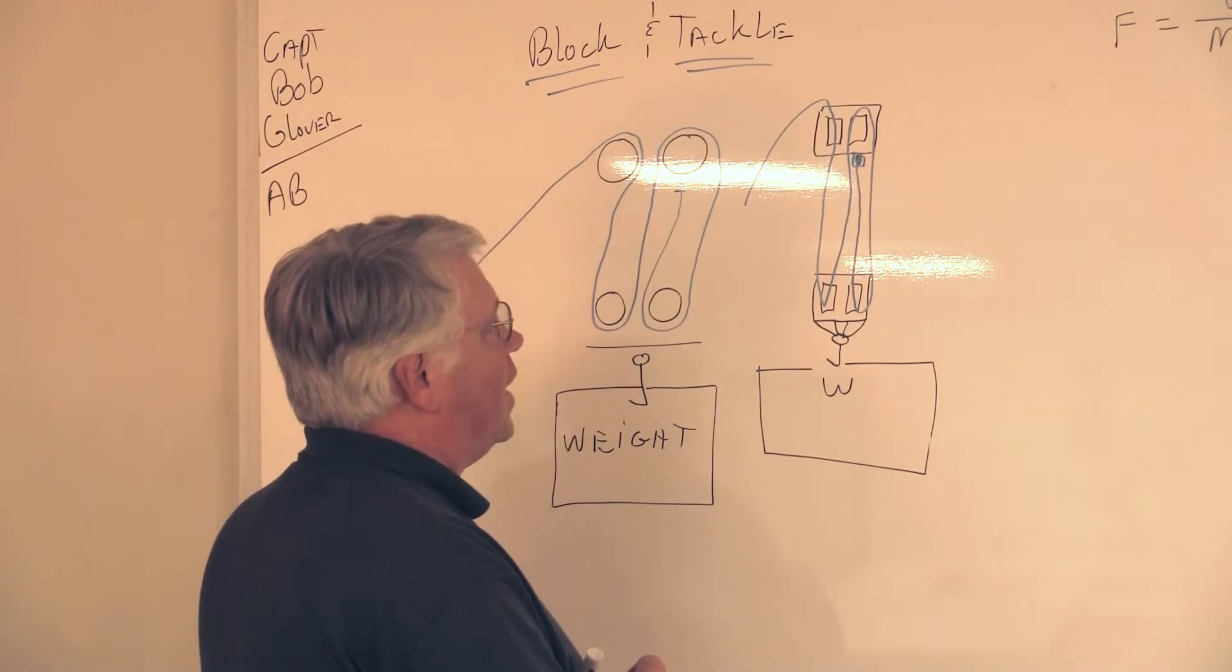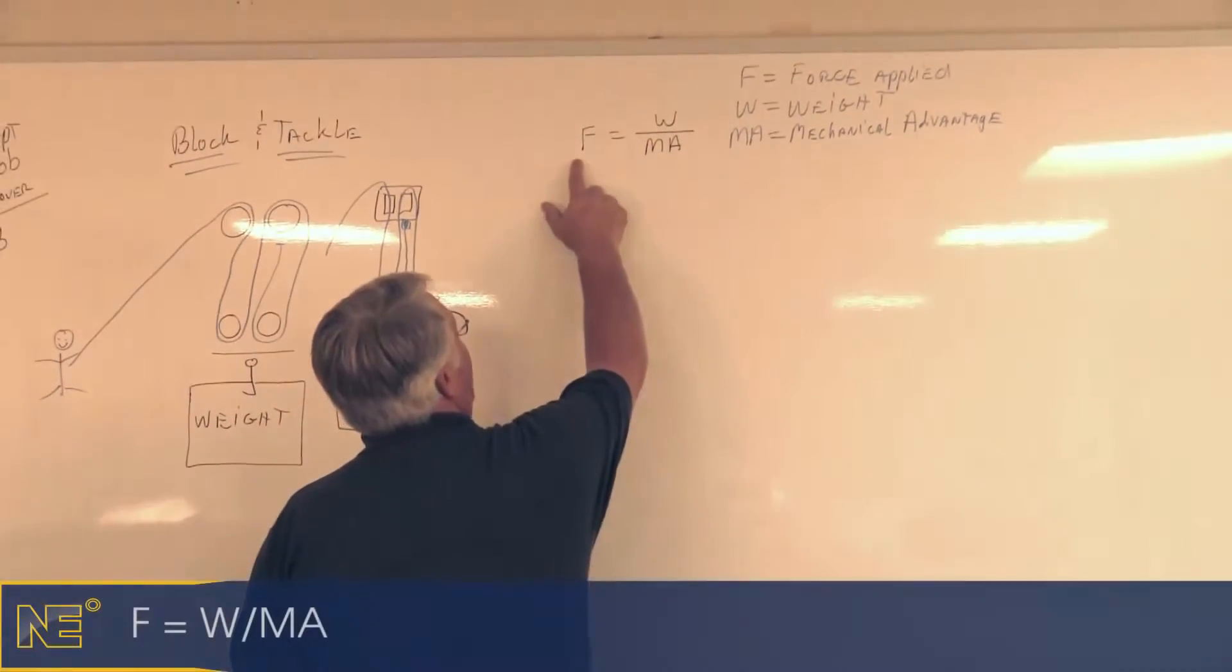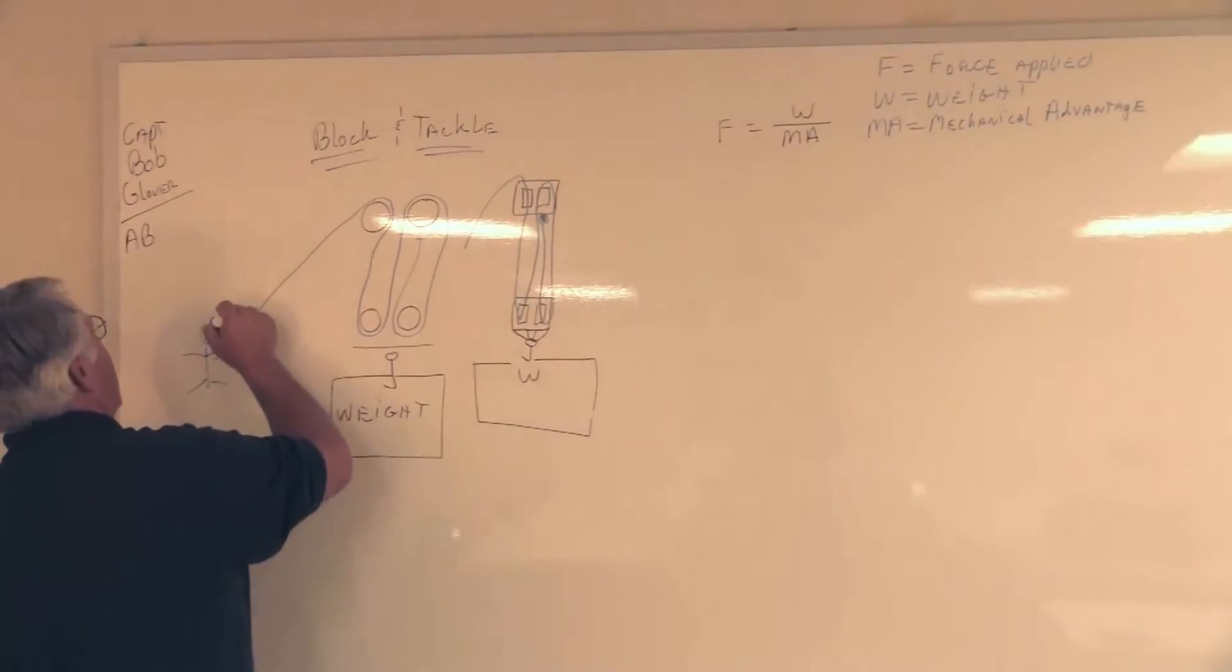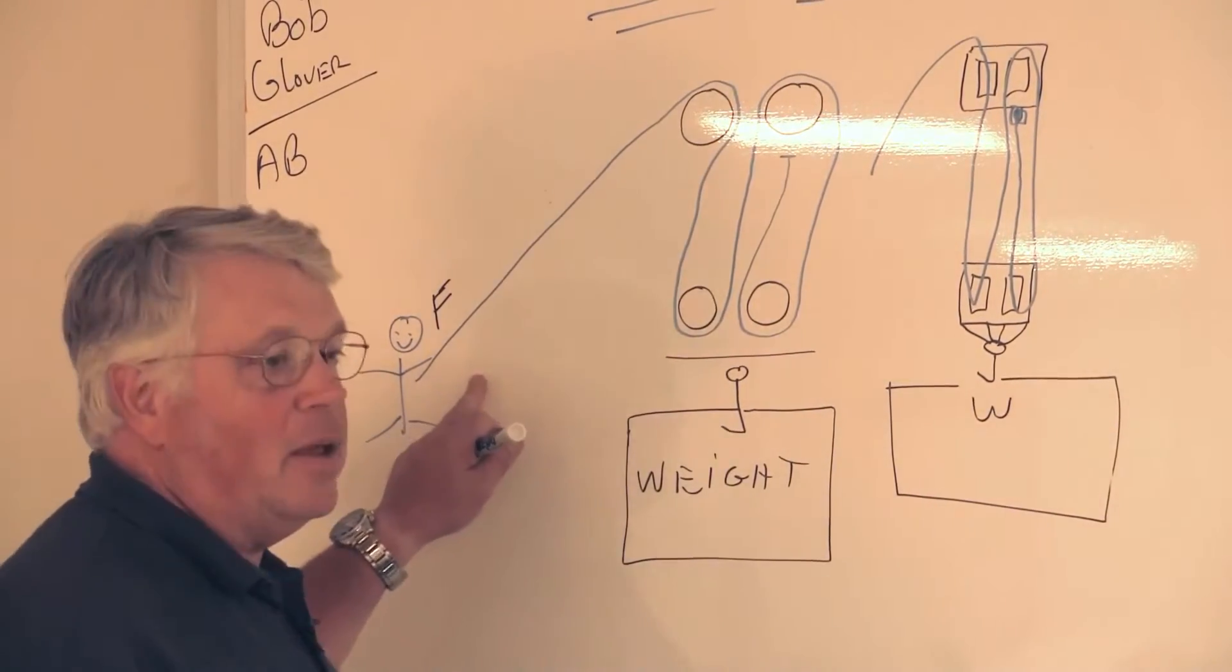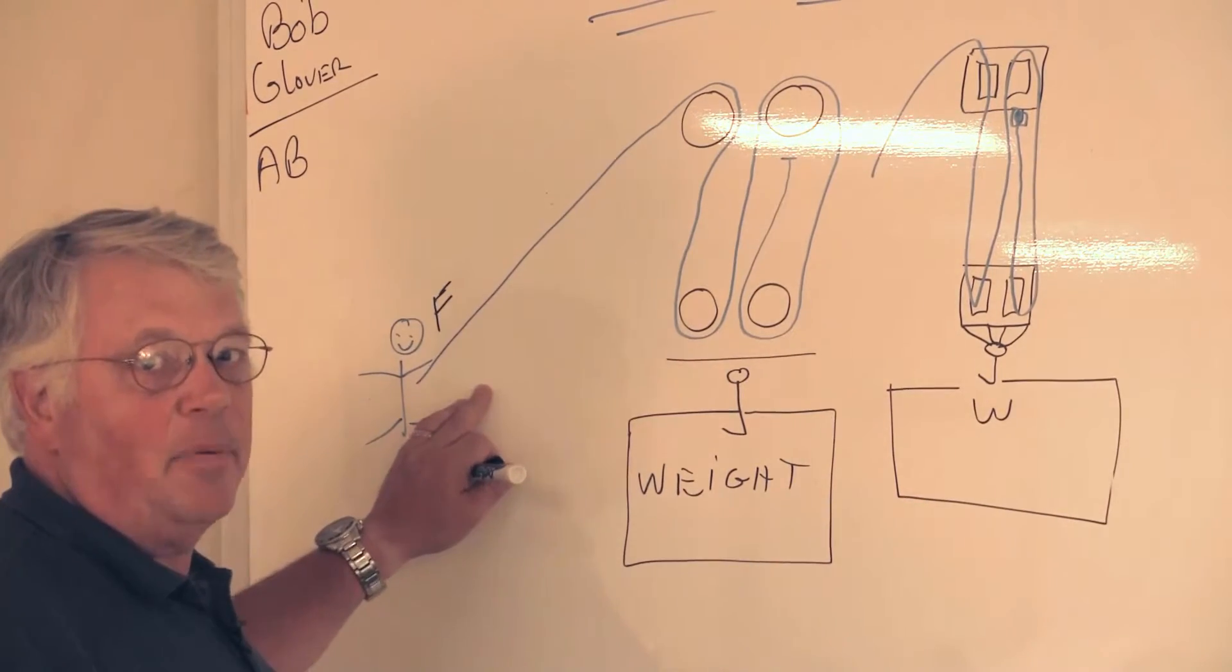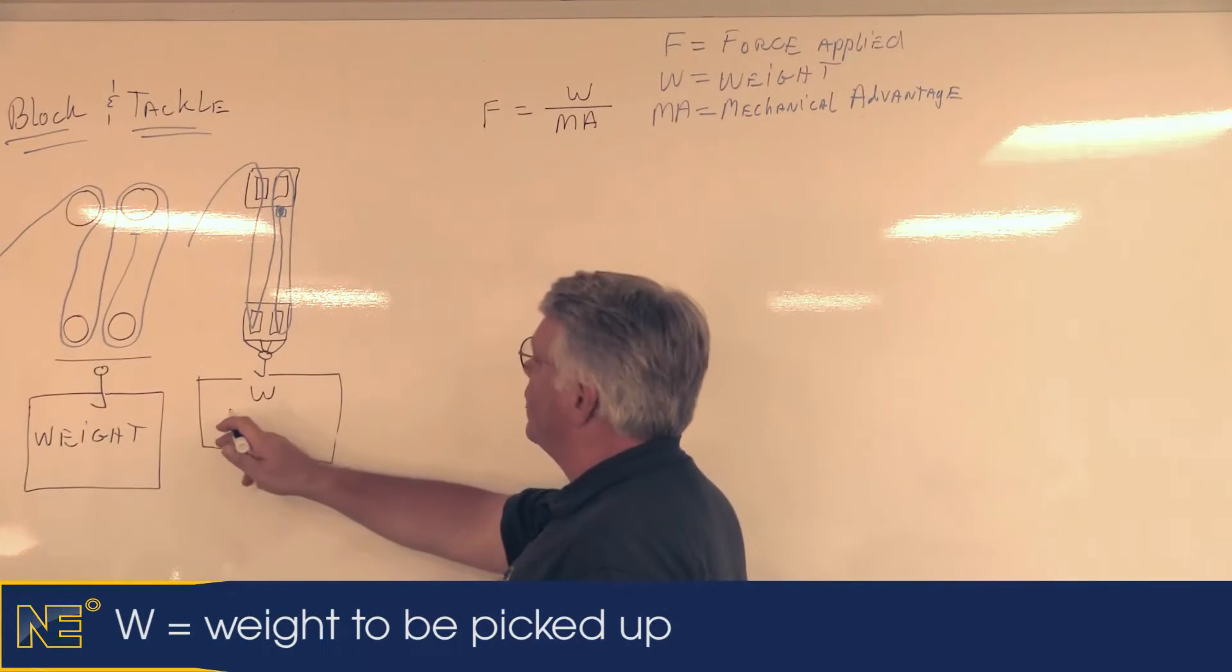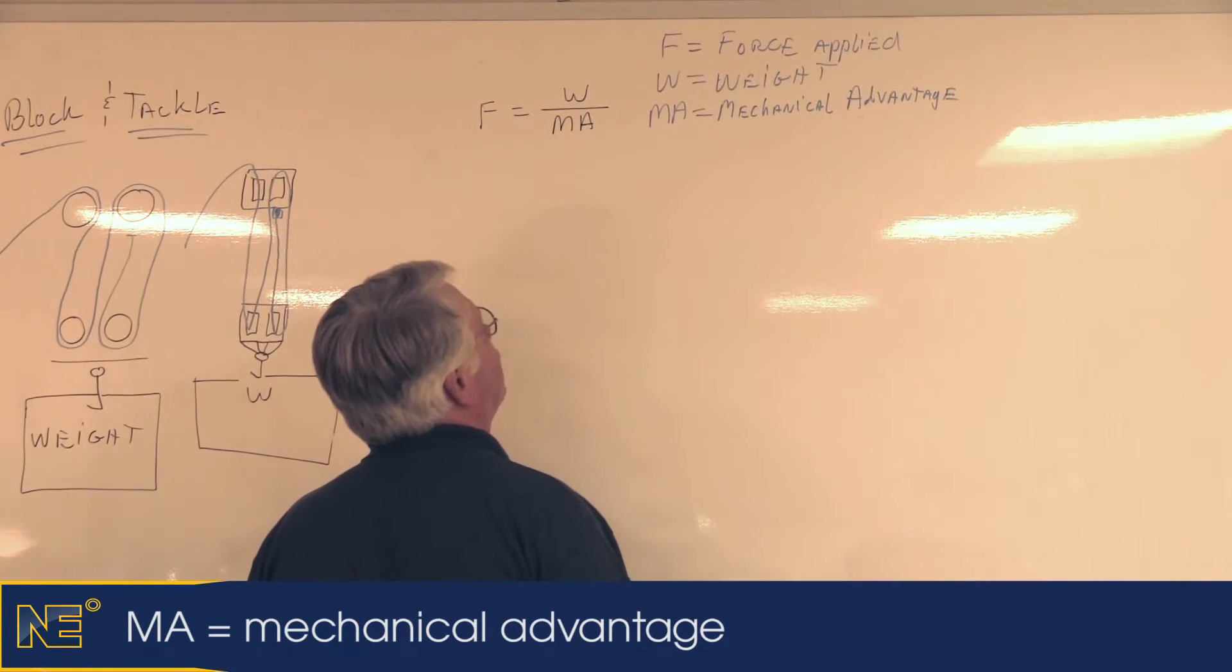We have to have a formula. Here's our formula: F = W / MA. F is force - that's the force that we apply with our hands. This could be just human power, or it could also be a winch that you might have on deck, whether it's a capstan, an anchor winch, or a tow winch. W is the weight that we're going to pick up. We're going to divide that weight by what is known as the mechanical advantage (MA).